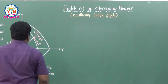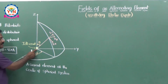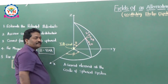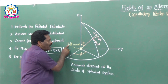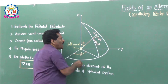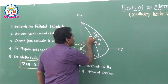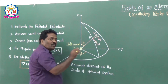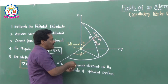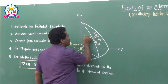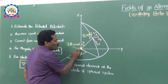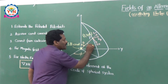Consider this figure. Let us assume that a current element IDL is at the center of the spherical coordinate system, that means it is at the origin, and it is alternating - it is IDL cos(ωt). The objective is to estimate the fields at the point P which is far away from this. We are going to estimate both types of fields: electric field as well as magnetic field. The electric field in the radial direction - in the spherical coordinate system the point P is specified as r, theta, and phi, where r is the distance from the origin to this point. So the source is at the origin and the observation point P is at a distance r.